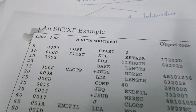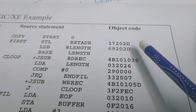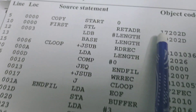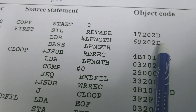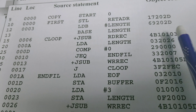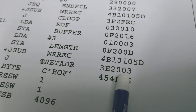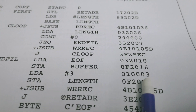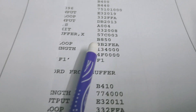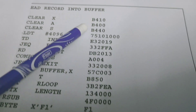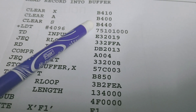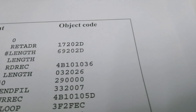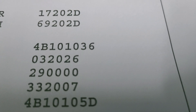This is a SIC/XE example program. Looking at the object code column, we can identify the instruction format from the object code size: 3 bytes means format 3, 4 bytes means format 4, 2 bytes means format 2. The instructions B4-10, B4-00, B4-40 are format 2 object codes. Only format 4 instructions use absolute addressing; format 3 instructions use relative addressing.